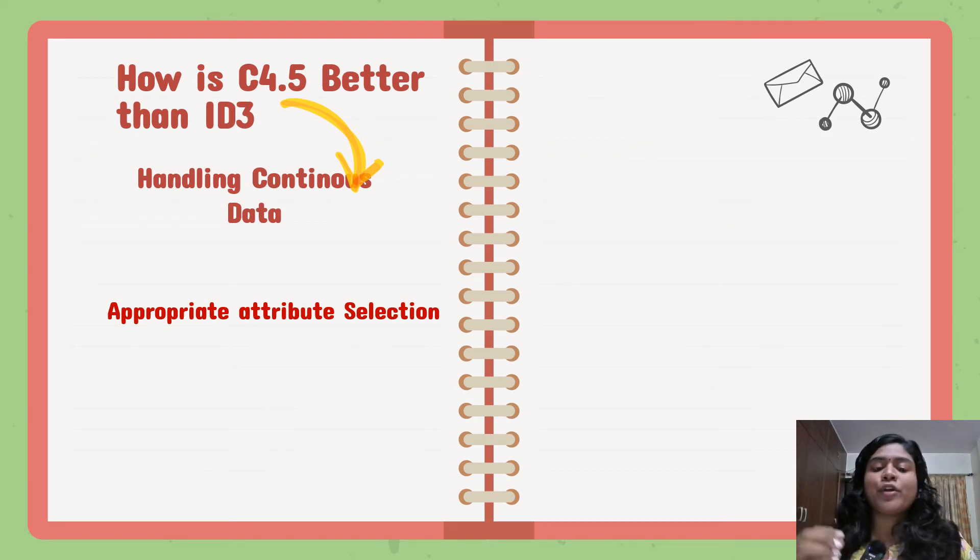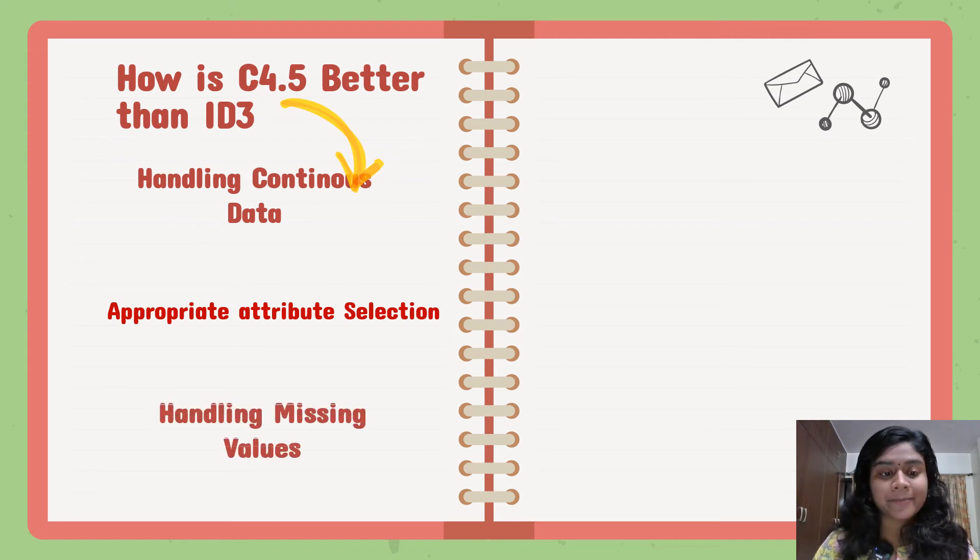Then it is an appropriate attribute selection. So over here it uses normalized information gain to come up with the attribute which has the highest normalized information gain. It is easy to handle missing values. Now handling missing values is a difficult and different ball game altogether. But C4.5 makes your life easy. So if you have missing values, it will replace it by question marks. And what it does is it will not bother about the missing values. It will calculate the normalized information gain without bothering much about missing values.